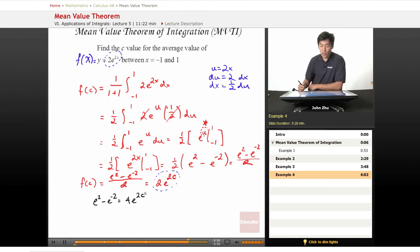Well, we can take the natural log of both sides. Actually, since we're trying to isolate the c, let's put the 2 on the other side. So e squared minus e to the negative 2 over 4 equals e to the 2c.